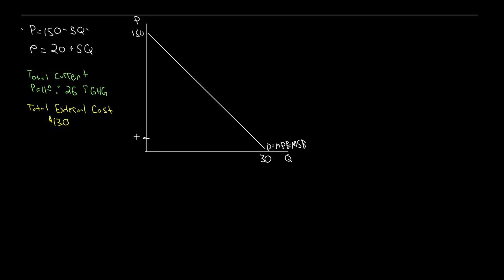On the other side, we have our supply curve, starting at 20 and going up. This is our supply, or in other terms, the marginal private cost — what we normally just call marginal cost. In this case, it's just the marginal cost of the firms producing. It doesn't equal the marginal cost to society because we're dealing with a negative production externality: every time we produce a unit, there's an extra environmental cost that the firm gets to produce for free, while society ends up paying for it.